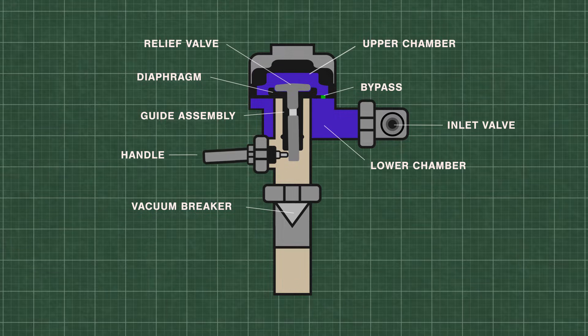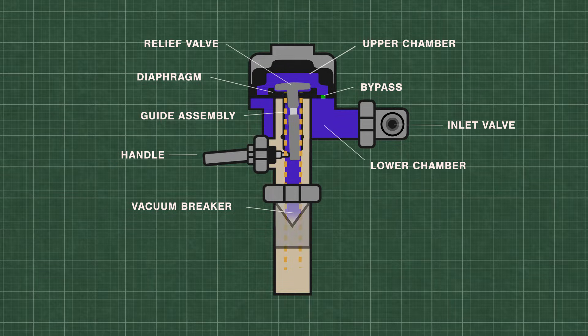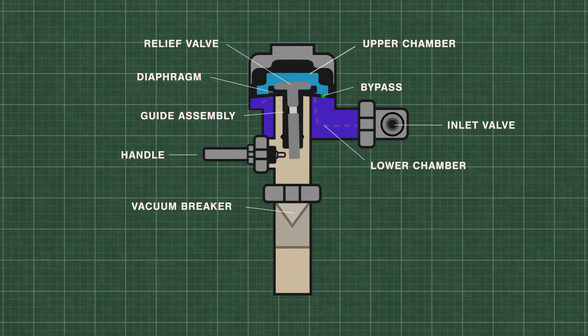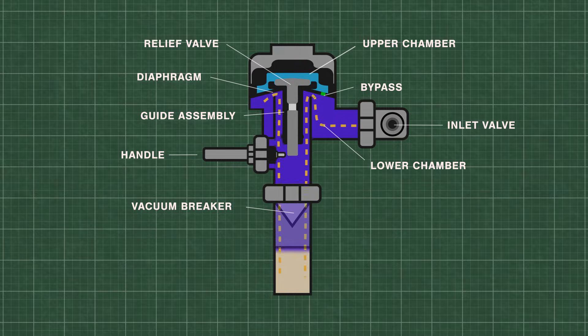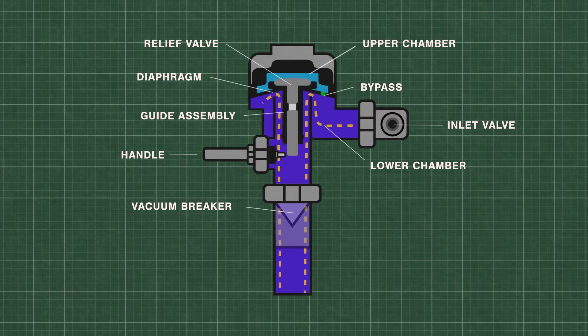When the handle is pressed, the relief valve opens and releases water from the upper chamber, which decreases the pressure. High pressure water from the inlet now lifts the diaphragm up and travels down the flush pipe.